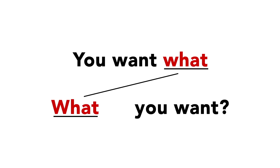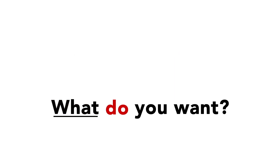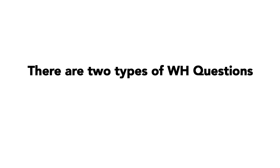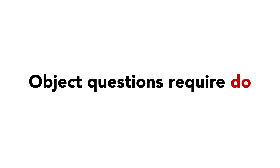Remember, for correct grammar, object questions need DO. So let's review WH questions. First, a WH question uses what, who, when, where, why, which and how. Next, there are two types of WH question: subject and object. Finally, object questions are more difficult and require DO.